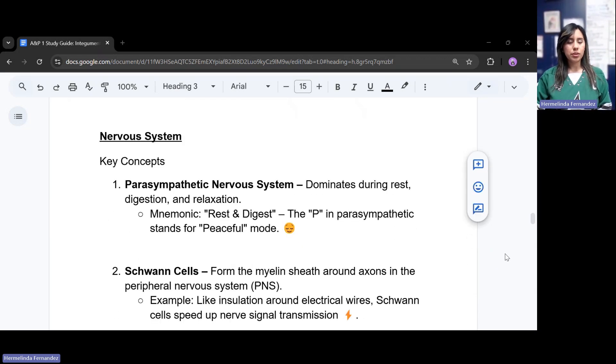Now going into the nervous system. Some of the key concepts of the nervous system would be the parasympathetic nervous system. This dominates during rest, digest, and relaxation. A mnemonic for this would be rest and digest. The P for parasympathetic stands for peaceful mode. So parasympathetic, just think of peace. You're resting and digesting.